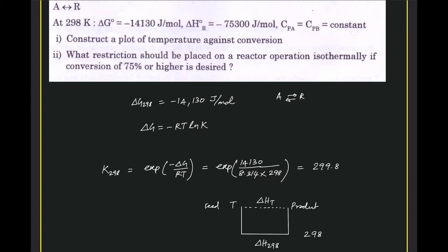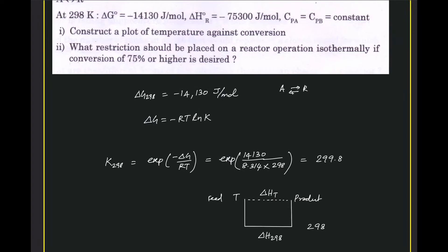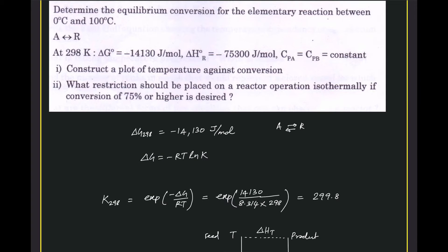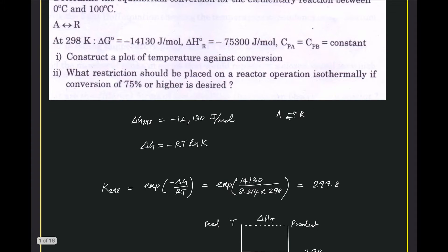We know from the thermodynamic relation that delta G equals minus RT ln K, from which we can get the value of K at 298 Kelvin using the given value of delta G at 298 Kelvin. We need to ensure that the units of delta G and R are the same — delta G is given in joules per mole Kelvin, and R is also in joules per mole Kelvin.